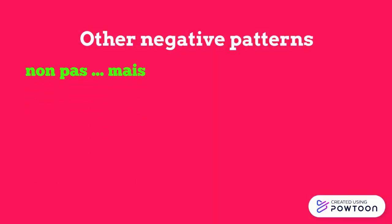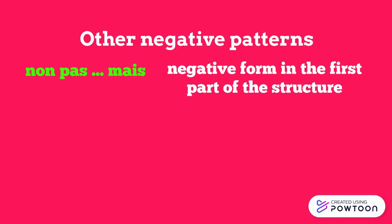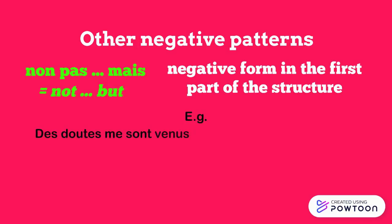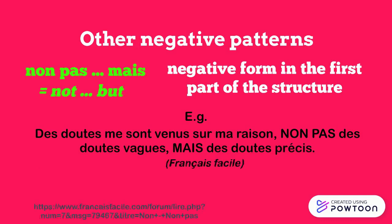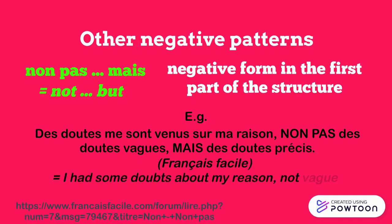Non pas mais is used when the negative form is in the first part of the structure. It means not that. For instance, des doutes me sont venus sur ma raison — non pas des doutes vagues, mais des doutes précis. I had some doubts about my reason — not vague doubts, but specific ones.